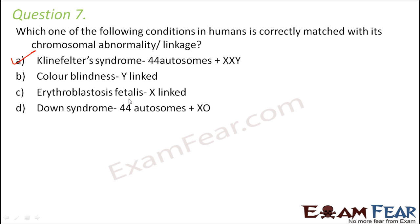Down syndrome has nothing to do with the sex chromosomes. This is basically an autosomal abnormality — a chromosomal disorder where we have a third copy of chromosome 21, also termed as trisomy 21. Instead of having two chromosomes, you have three chromosomes — that is an extra copy on the 21st chromosome. So that is Down syndrome, and this option is also not correct.